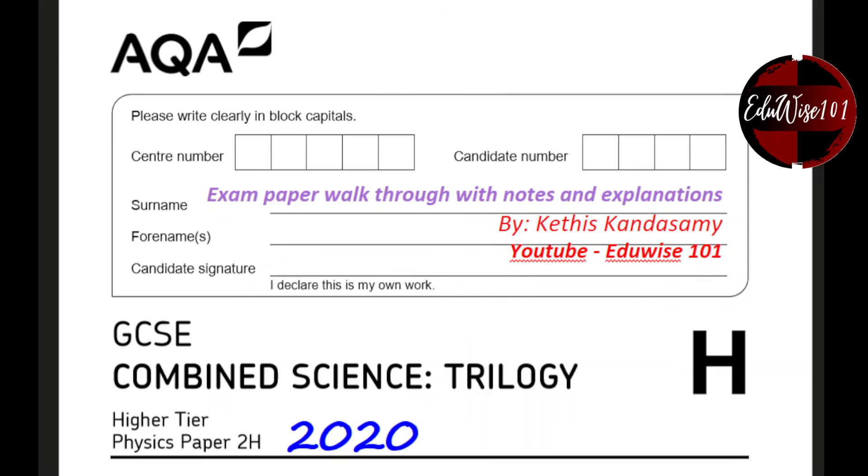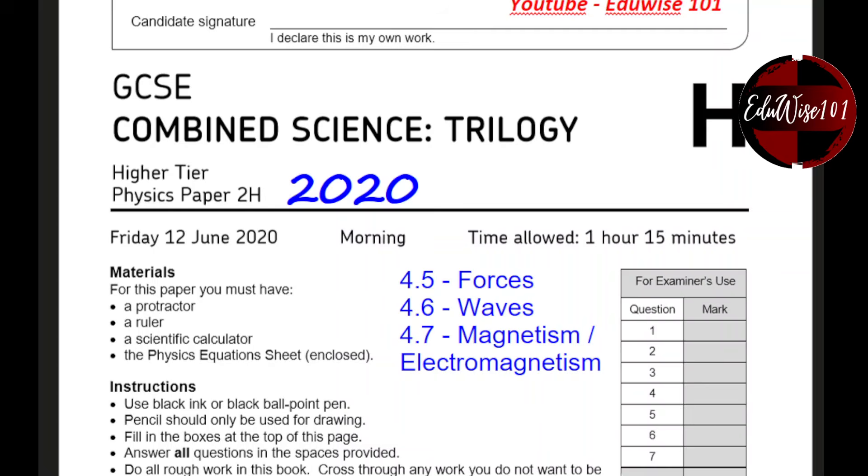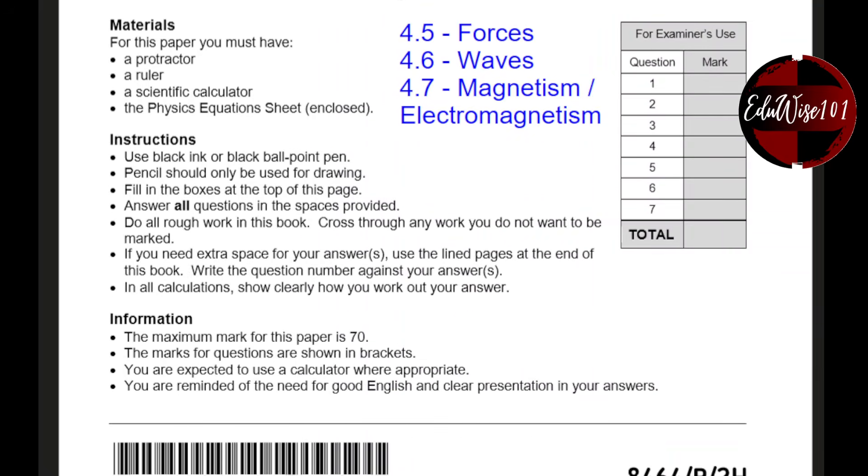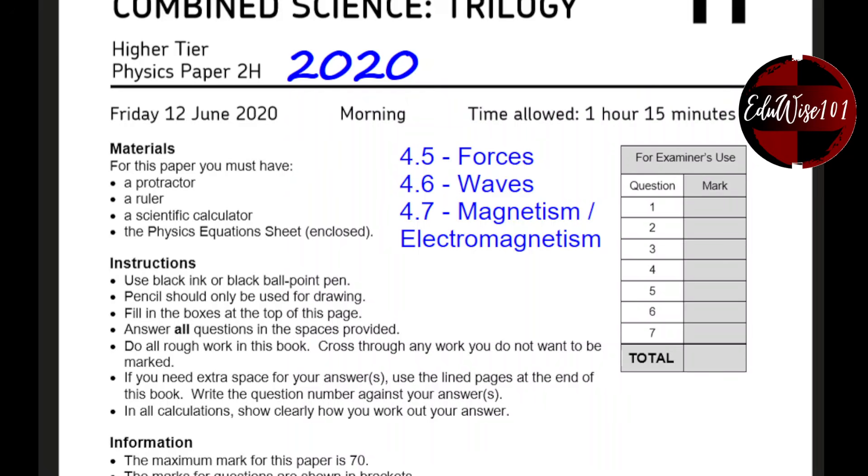Hello everyone, this is Ketish here. In this video I'm going to go through the AQA Combined Science Physics paper 2, higher tier from 2020. Paper 2 is on three main topics which is forces, waves and magnetism. This paper has a total of seven questions and it's out of 70 marks.